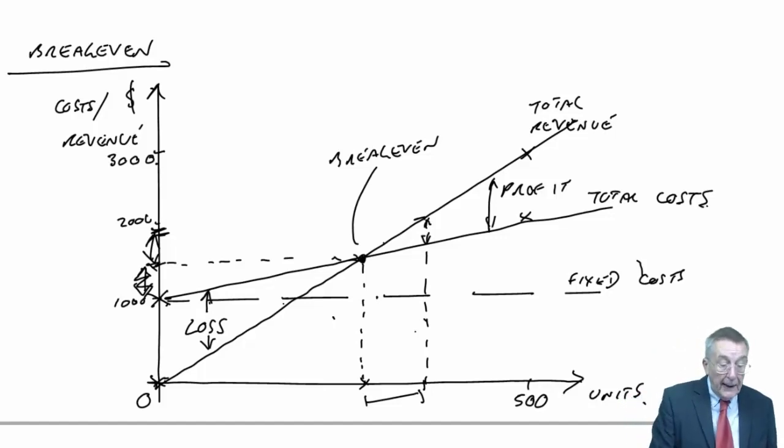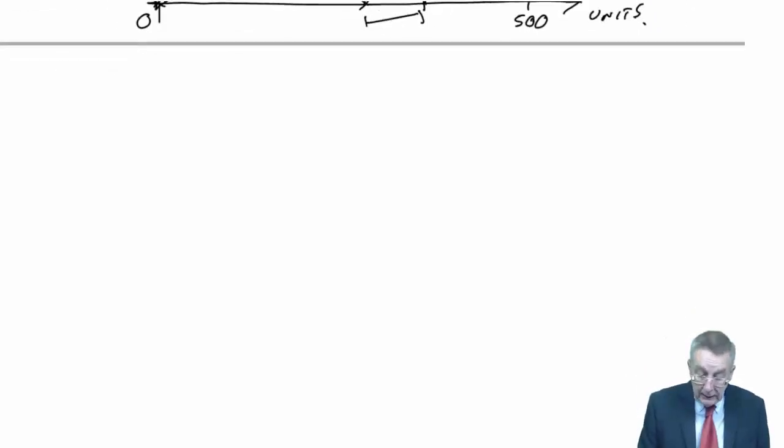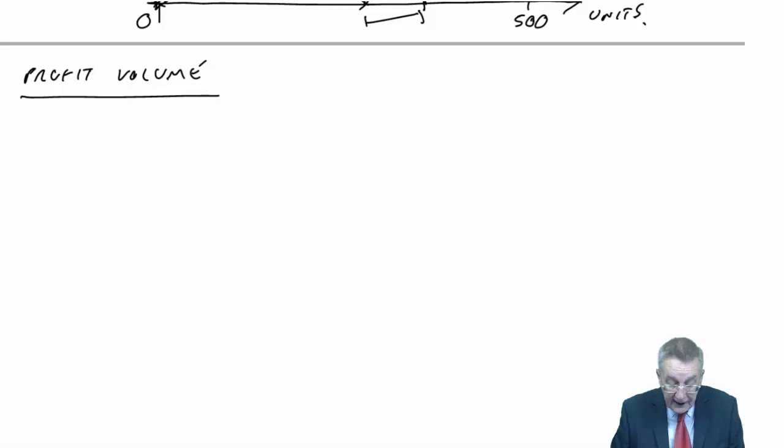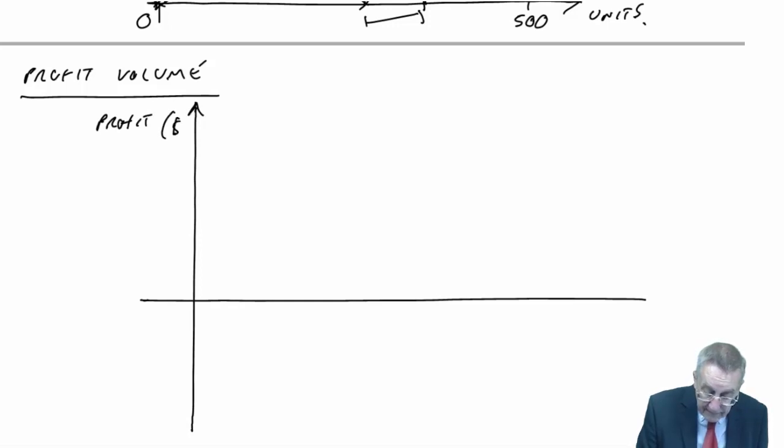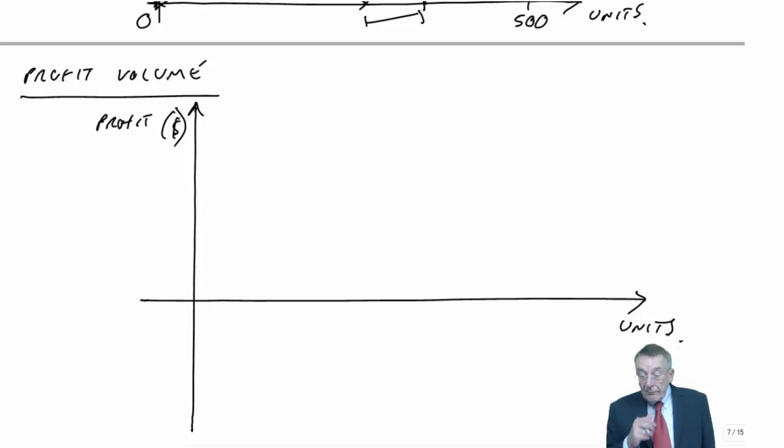The other one, which is even simpler, is something called the profit-volume chart. Again, you've got space with the lines drawn nicely if you want to draw it.